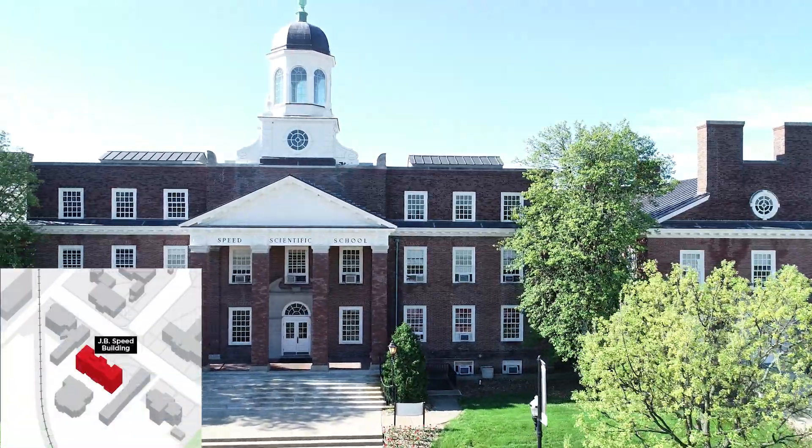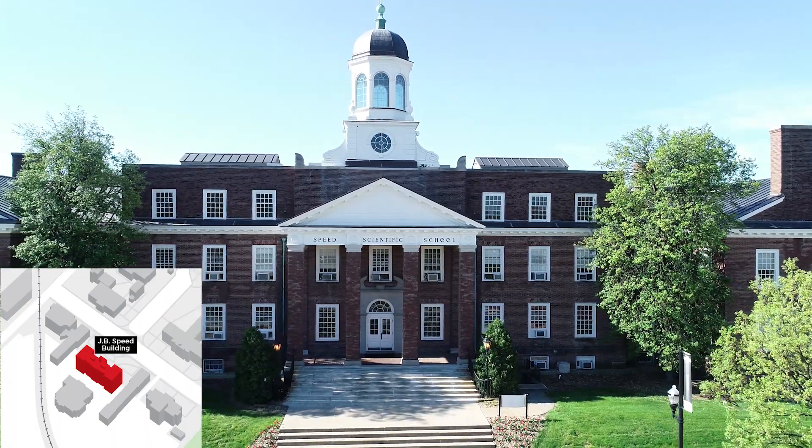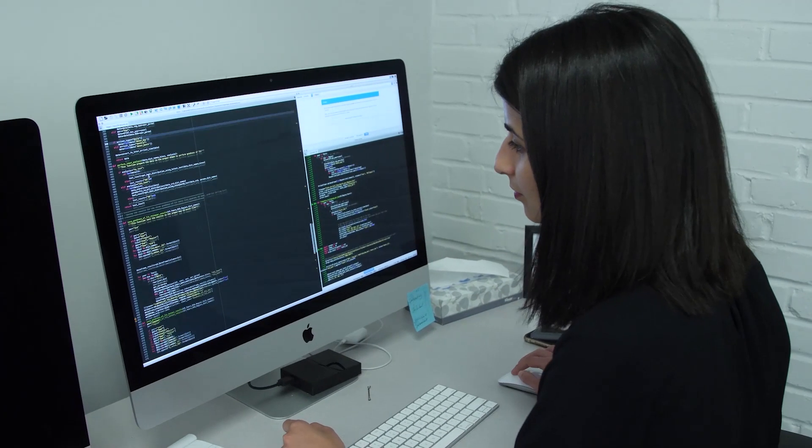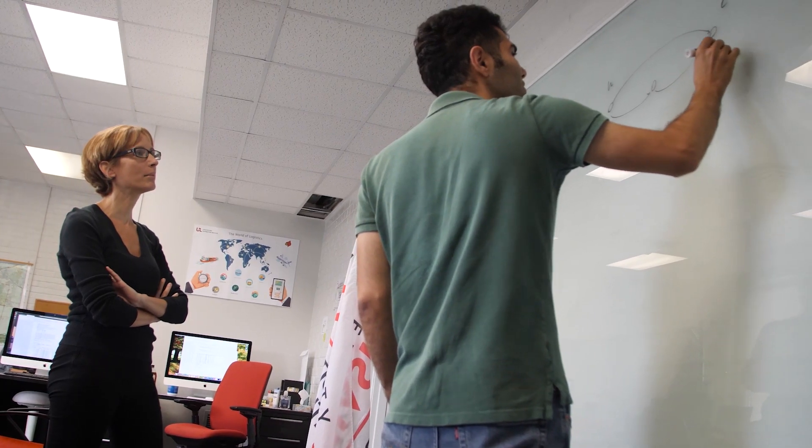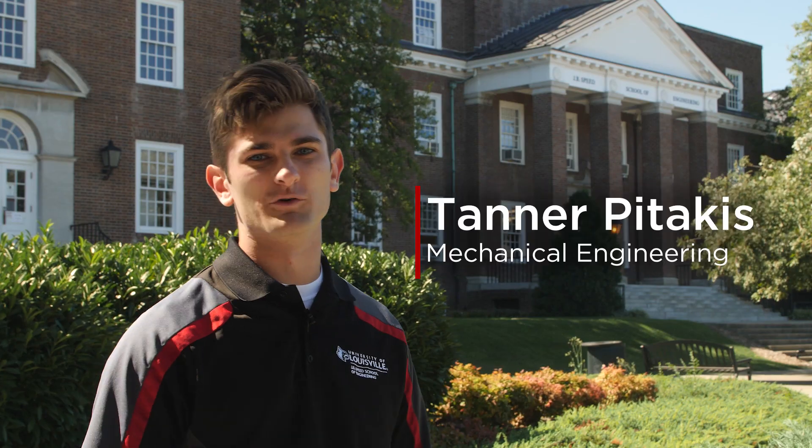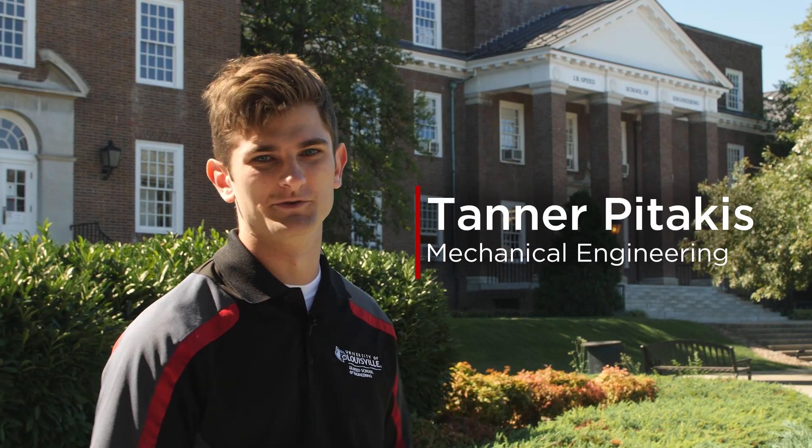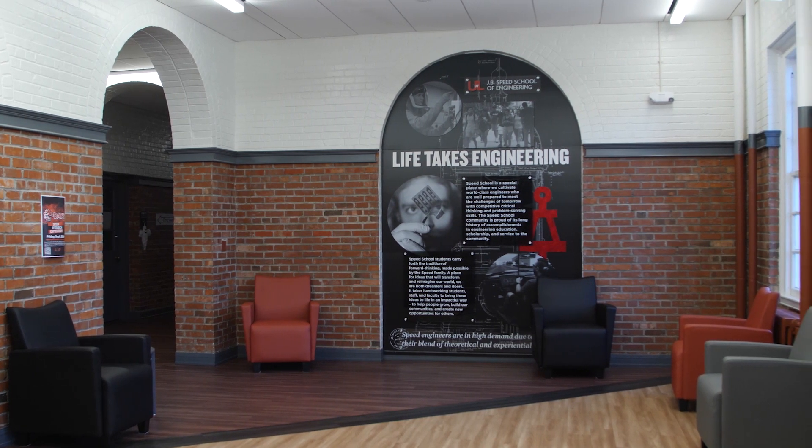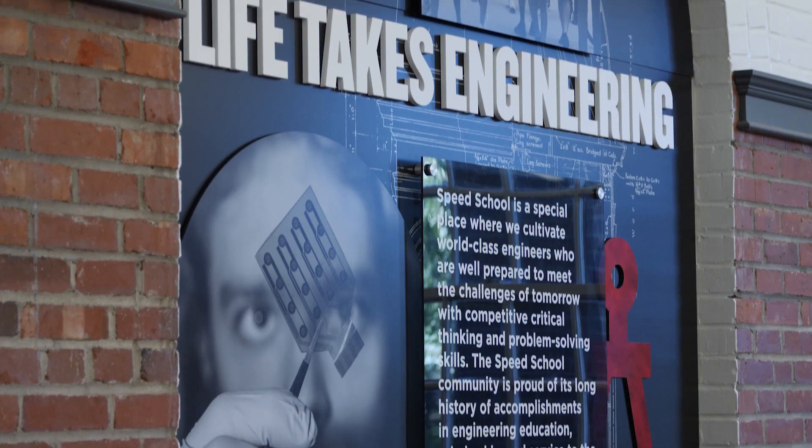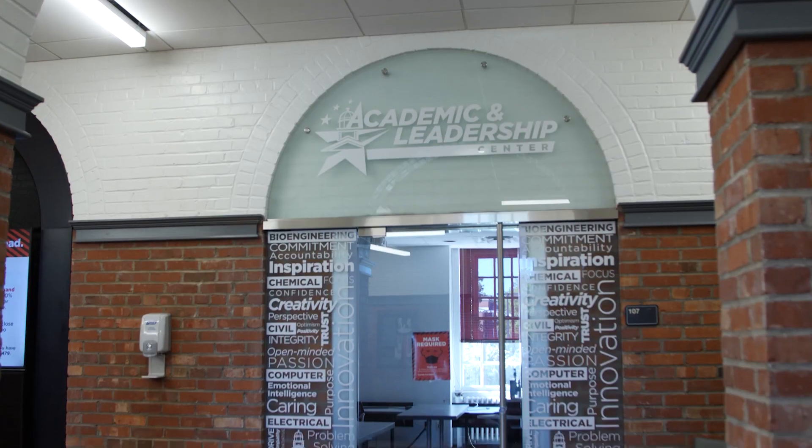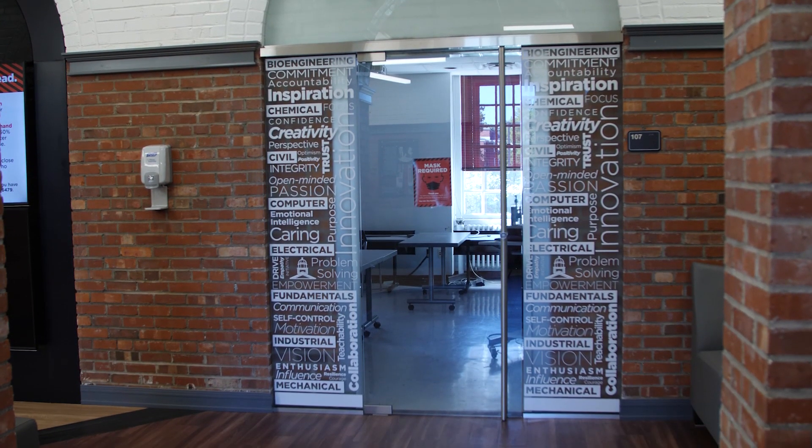This is our main building of JB Speed School of Engineering. On the top floor, we house industrial engineering, which is the engineering behind efficiencies. On the second floor, we house our main admissions for Speed School of Engineering. The first floor has our fundamental engineering department where you'll take all your calc classes. It also houses our reach tutoring room.